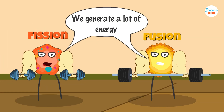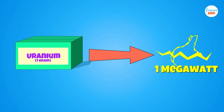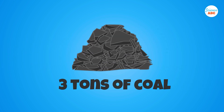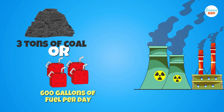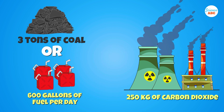Both processes generate a significant amount of energy. The fission of one gram of uranium or plutonium per day produces around one megawatt of energy. This is equivalent to the energy produced by burning roughly three tons of coal or 600 gallons of fuel per day, producing approximately 250 kilograms of carbon dioxide.